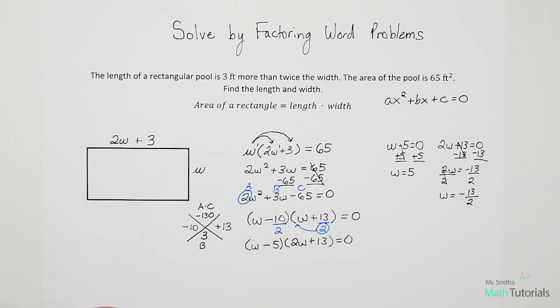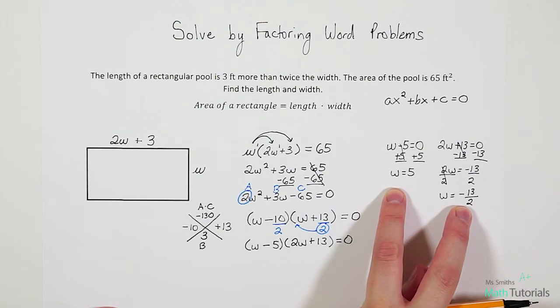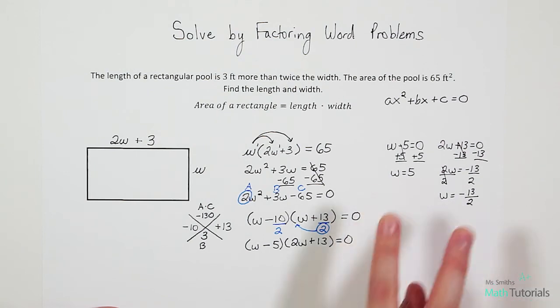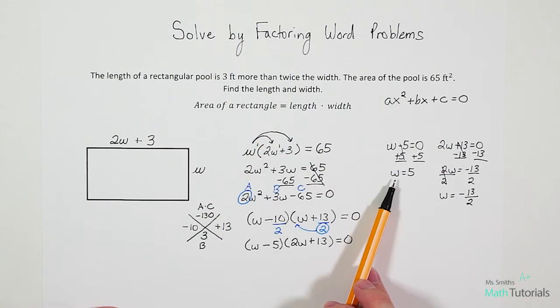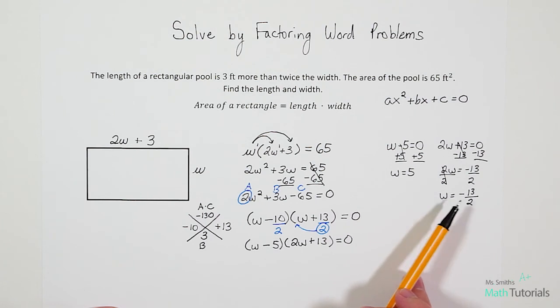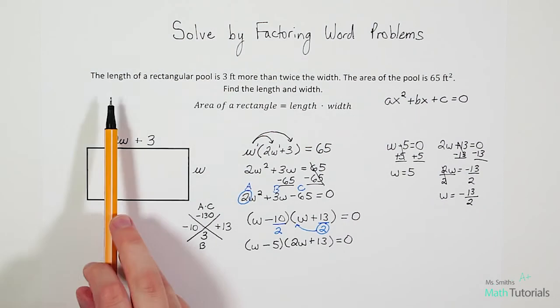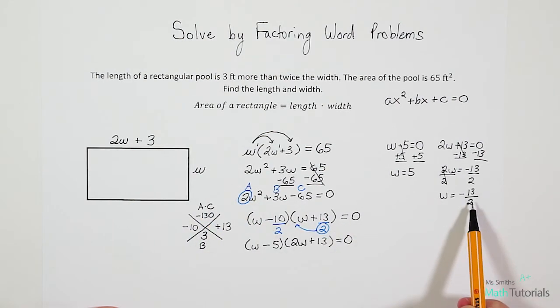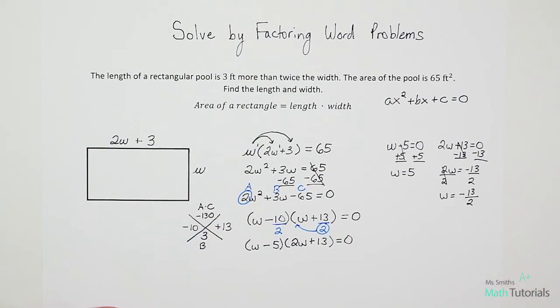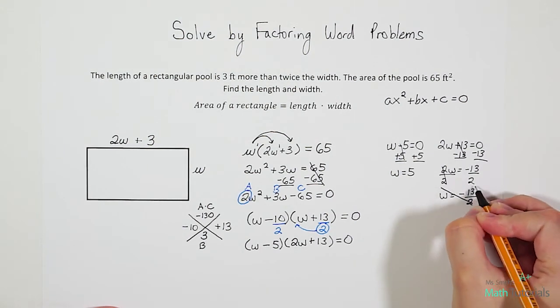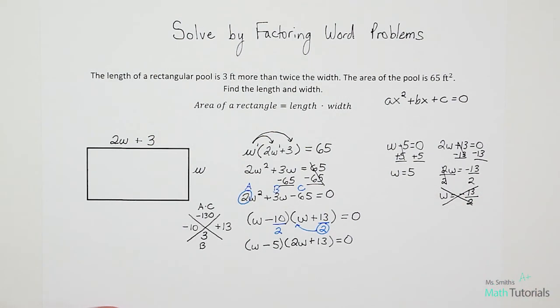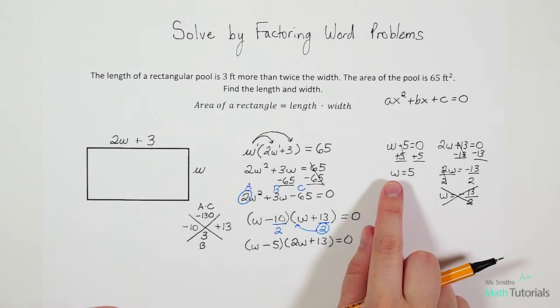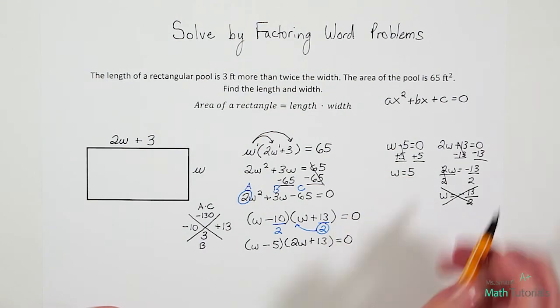Okay, so now it's kind of weird, right? Because we have two answers for W. When really, we only are going to have one answer for W. Does it make sense that we could have a negative measurement? I mean, think about this. This is a rectangular pool. Could we say this side is negative 13 over 2 or negative 6.5 feet? No, that wouldn't make sense. We don't measure in negatives. So we can actually throw this answer away because it doesn't make sense for the context of our problem. But the W equals 5. Now that makes sense. So that's going to be our width.